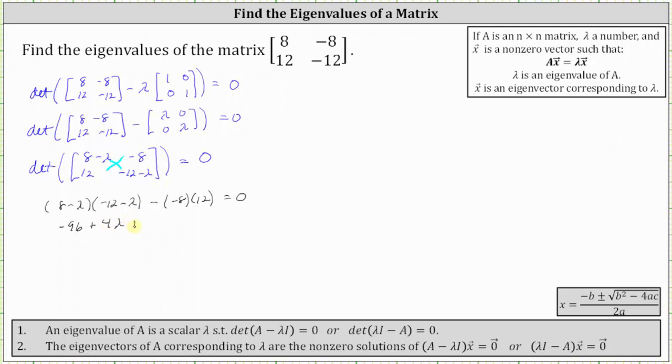Then we have plus λ². And then we have minus negative 96, which simplifies to +96 equals zero.